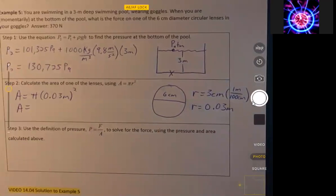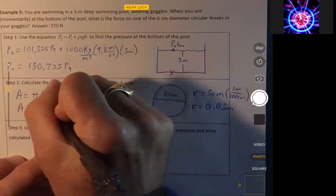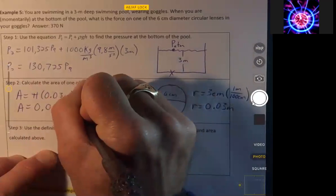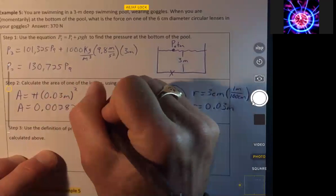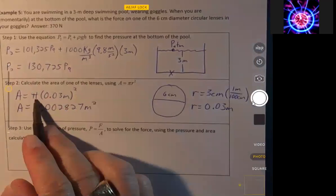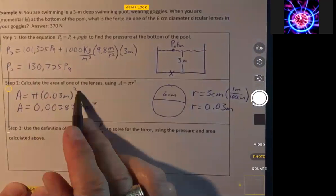and that comes out to 0.0028, let's just keep an extra digit there, 2827 square meters. Pi does not have any units, it has units of meters, but then it's squared.